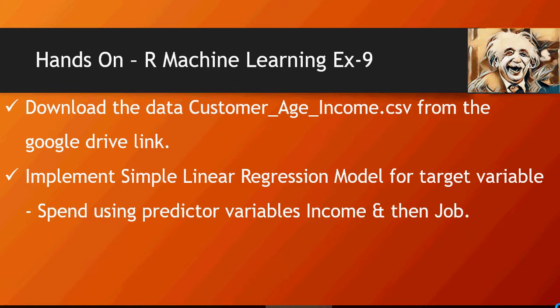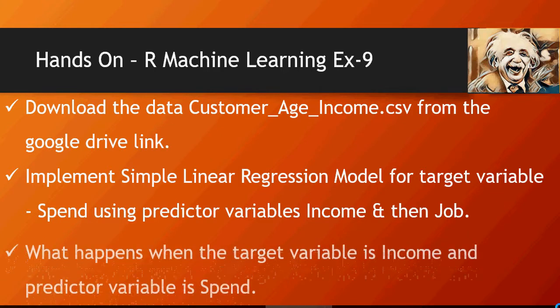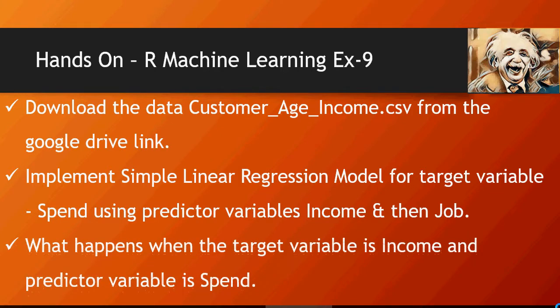Think about this: what if the target variable and predictor variables are switched? That means now the target variable is income and the predictor variable is spend — and see the difference.